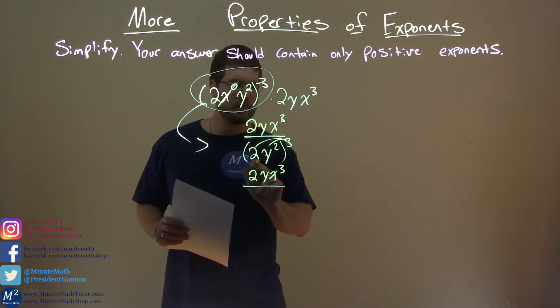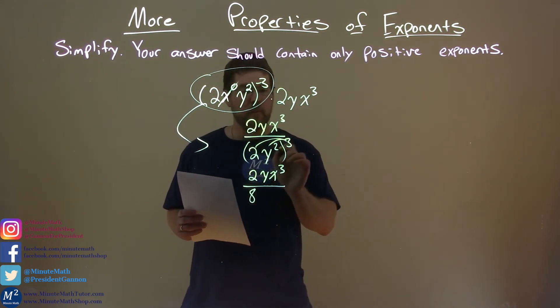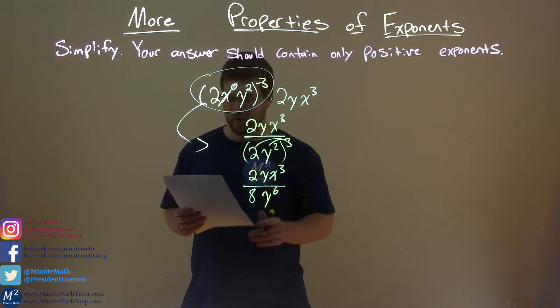2 to the third power is 8. y squared to the third power, we multiply the exponents, that's a y to the sixth power. Okay?